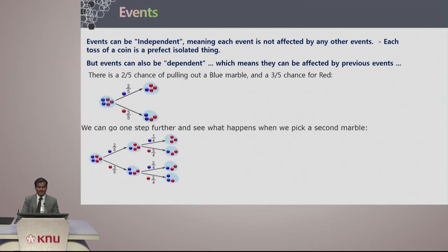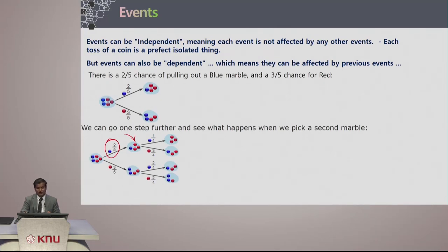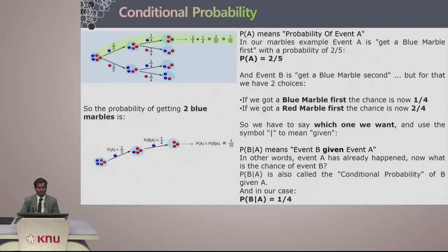There is a 2 out of 5 chance of pulling out a blue marble and a 3 out of 5 chance for a red marble. Now see what happens when we pick the second marble. If you pick up the blue marble first, your probability changes drastically in the next step, because now there are only four marbles left and the probability of picking up the blue marble changes.